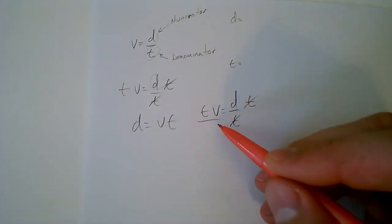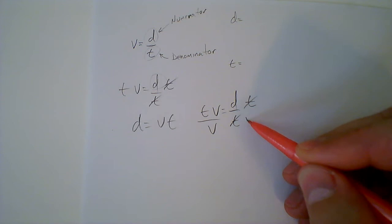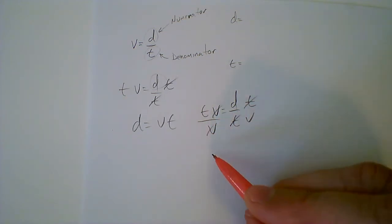And then after that, all I have to do is just get rid of the v now, and these are going to cancel out. T is isolated, t is alone. T equals d over v.